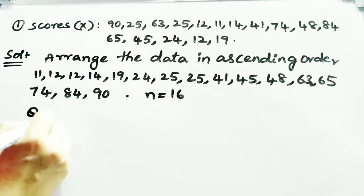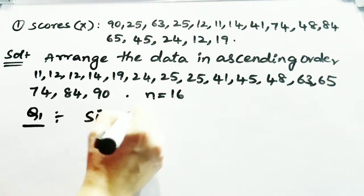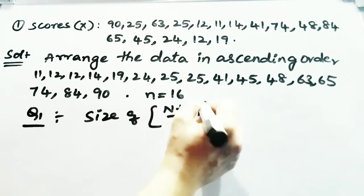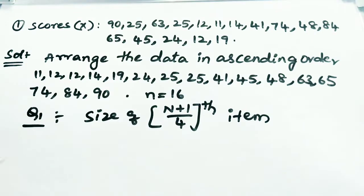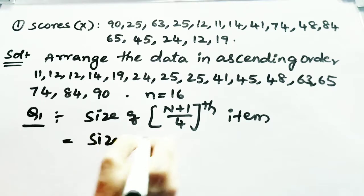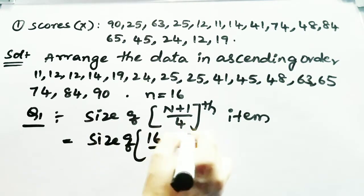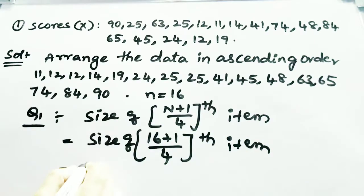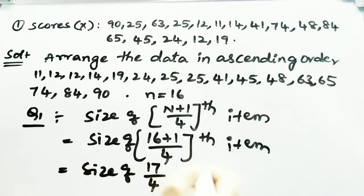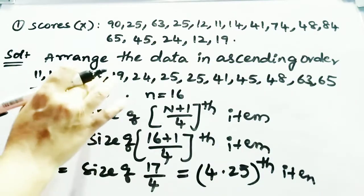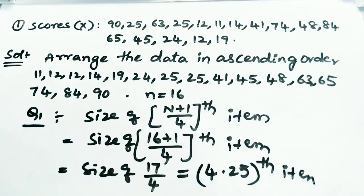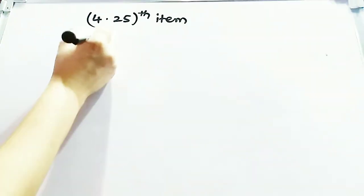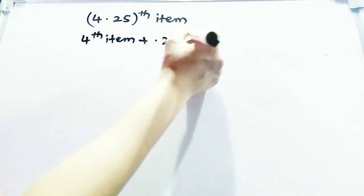Now calculate Q1. The formula is: size of (N+1)/4 th item. N is 16, so: size of (16+1)/4 = size of 17/4 = 4.25th item. This means the value lies between the 4th and 5th items. The 4.25th item means: 4th item value plus 0.25 times (5th item minus 4th item).